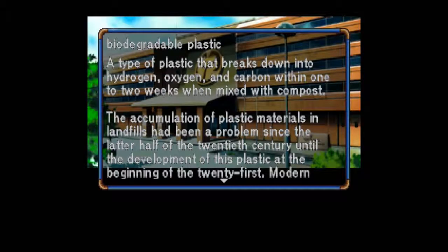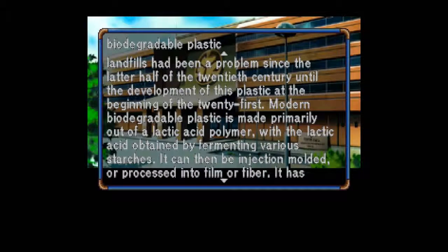Biodegradable Plastic: A type of plastic that breaks down into hydrogen, oxygen, and carbon within one to two weeks when mixed with compost. The accumulation of plastic materials in landfills had been a problem since the latter half of the 20th century, until the development of this plastic at the beginning of the 21st. We're still waiting for that, as far as I know. Do we have biodegradable plastic? Modern biodegradable plastic is made primarily out of a lactic acid polymer, with the lactic acid obtained by fermenting various starches. It can then be injection molded or processed into film or fiber.